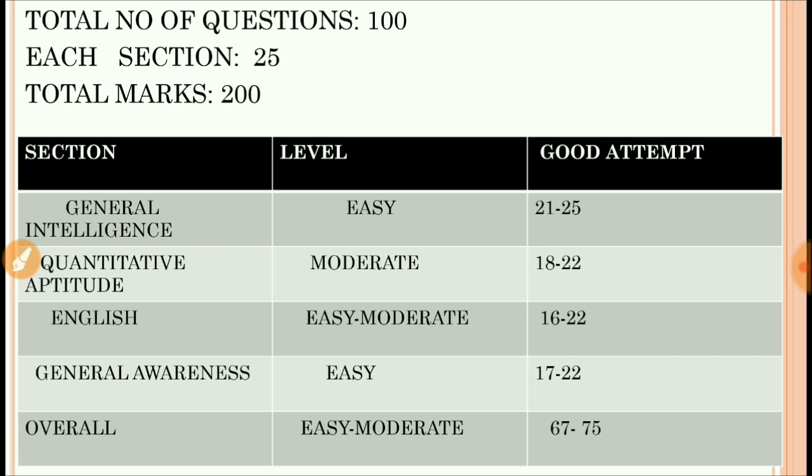General Intelligence level was easy. As you know, General Intelligence in SSC exam is very easy, which we cannot compare to banking level exam reasoning section. But in SSC, General Intelligence or the reasoning section is the most easiest section. The level was easy as always and good attempt you can do is 21 to 25 questions.